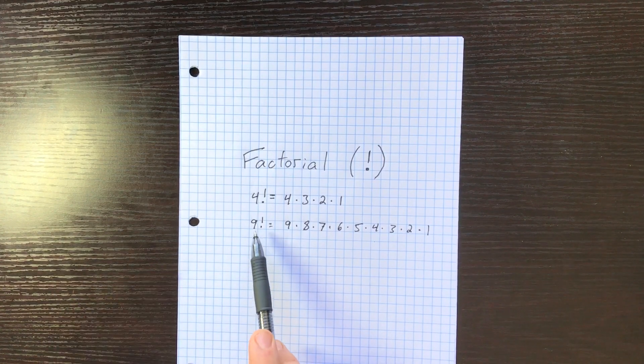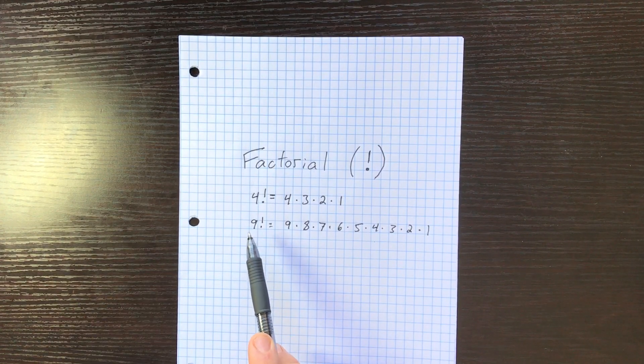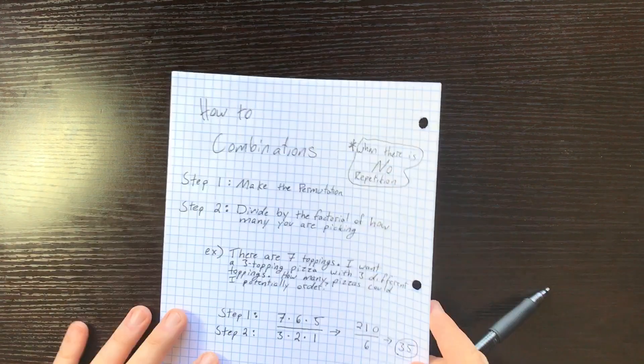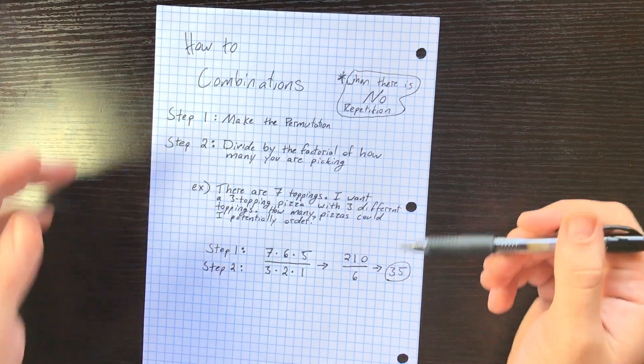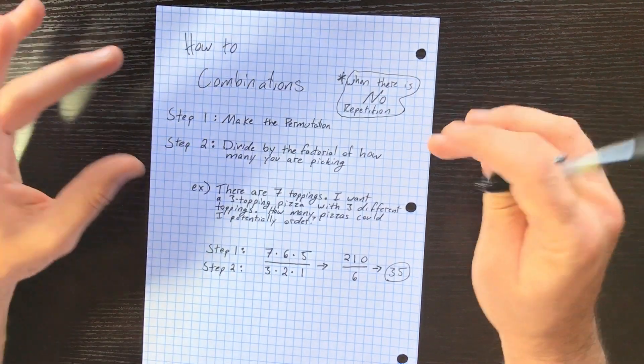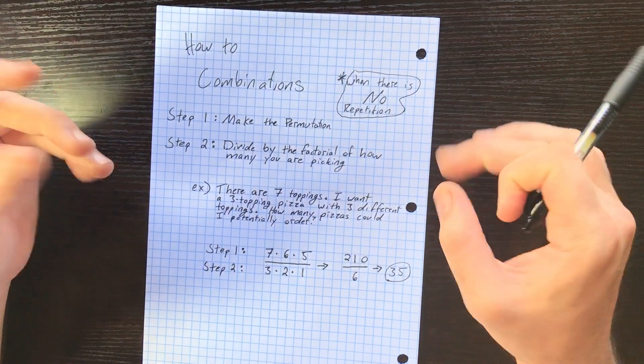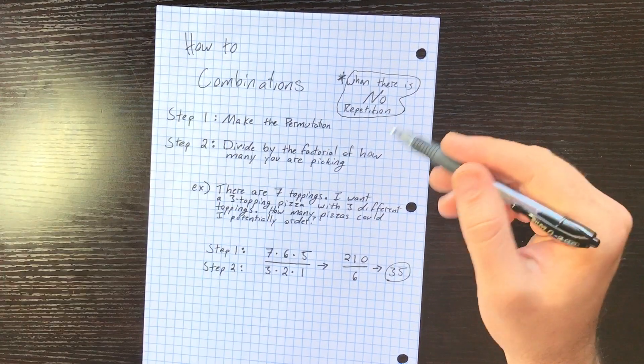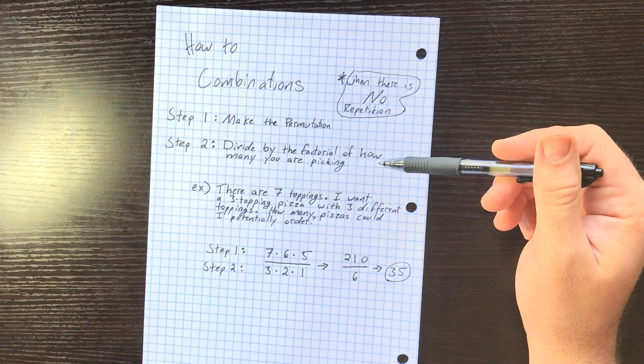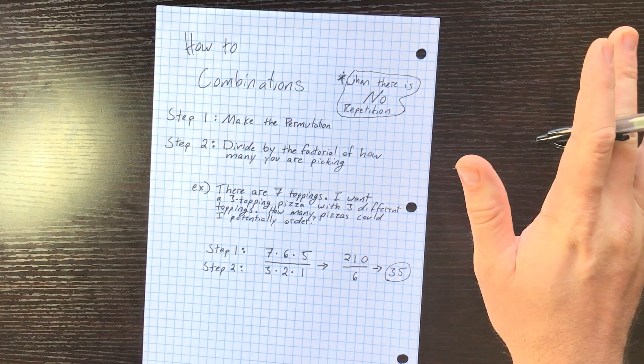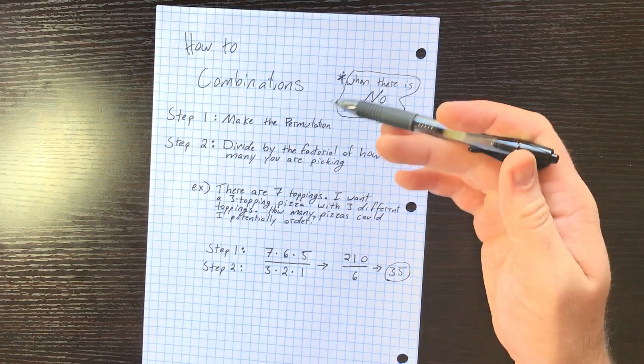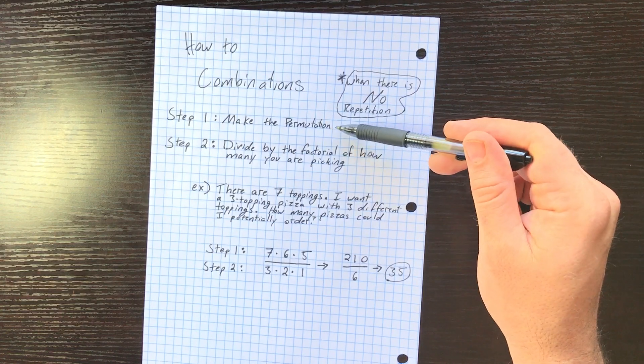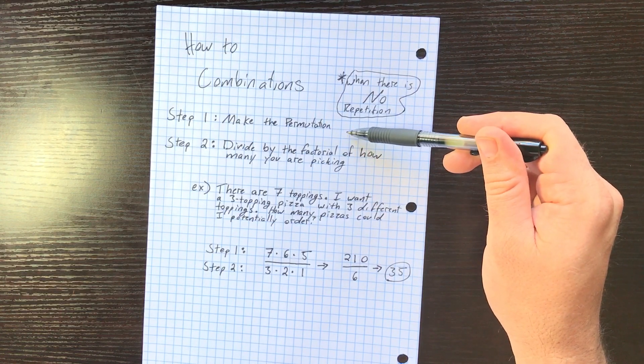How to do combinations when there is no repetition within the items. And we'll talk about why that's important a little bit, but for now just focus on how to do this. If you have a combination problem, which means the order does not matter - like we're giving the same prize to two people - you make the permutation as you normally would. But step two: you now have to divide it by the factorial of how many you are picking.